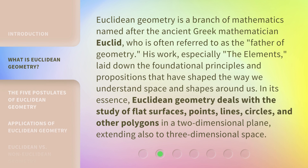Euclidean geometry is a branch of mathematics named after the ancient Greek mathematician Euclid, who is often referred to as the father of geometry. His work, especially the Elements, laid down the foundational principles and propositions that have shaped the way we understand space and shapes around us. In its essence, Euclidean geometry deals with the study of flat surfaces, points, lines, circles, and other polygons in a two-dimensional plane, extending also to three-dimensional space.